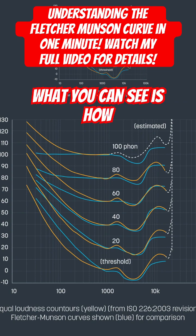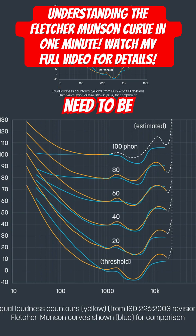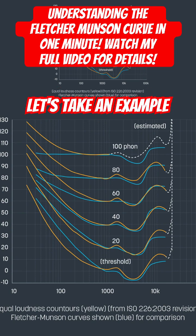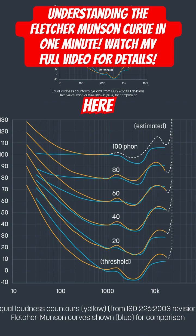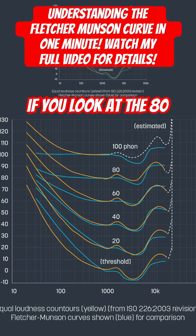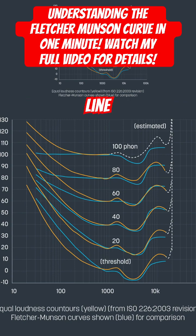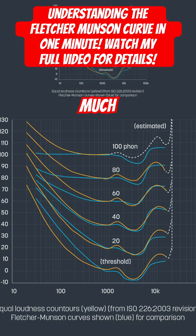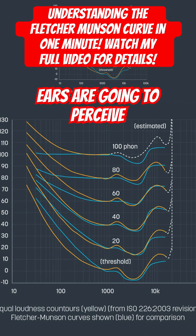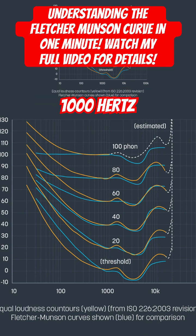What you can see is how loud things need to be. Let's take an example here. Let's take 1,000 Hz and if you look at the 80 FON line, you see that it lines up right on target — pretty much at 80 dB SPL, your ears are going to perceive 1,000 Hz.